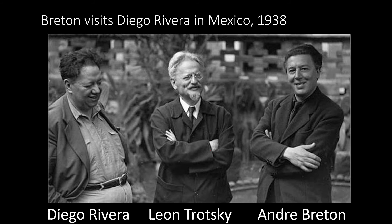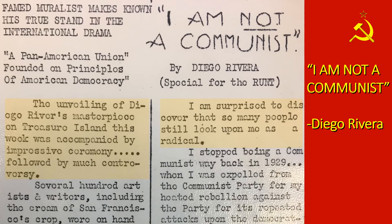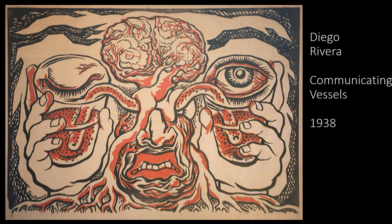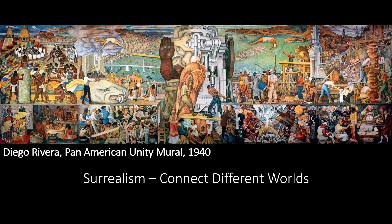In 1938, André Breton visited Mexico and met with Diego Rivera and Leon Trotsky, a communist revolutionary. If you recall, Rivera wrote he was not a communist two years later in 1940, but that wasn't true. All three men were communists — Rivera, Trotsky, and Breton. Rivera created this print to promote André Breton's surrealism lectures. The title, Communicating Vessels, is the same name as André Breton's surrealism essay published in 1932.